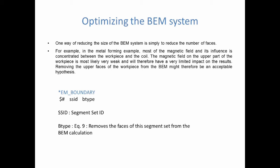One way of reducing the size of the BEM matrices is simply to have fewer surface elements that are part of the BEM mesh. For example, in our metal forming case, the magnetic field and its influence are concentrated between the workpiece and the coil. The magnetic field on the upper part of the workpiece is very weak and will have a very limited impact on results. Therefore, you could consider removing the upper faces of the workpiece from the BEM without a big difference. To do that, you build a segment set on the surface of the conductor and tell the solver to remove the faces of that segment set from the BEM system.